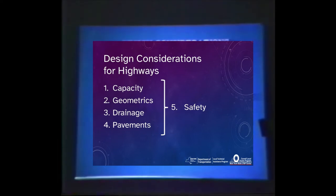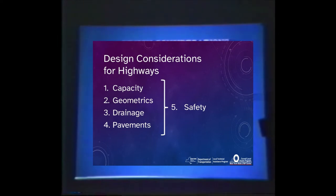One of them is concern for capacity, which for those of you from rural areas won't be too great a problem. The geometrics — both vertical alignment and horizontal alignment — are extremely important and can make the difference between whether a road is safe or not. The film we just saw made the point that drainage is extremely important. I remember a saying: the three most important aspects of road engineering are drainage, drainage, and drainage.